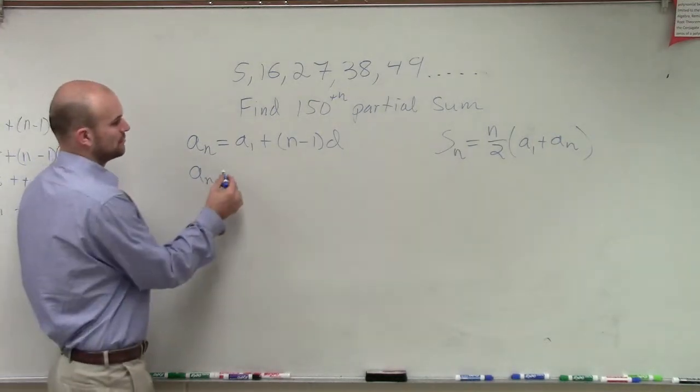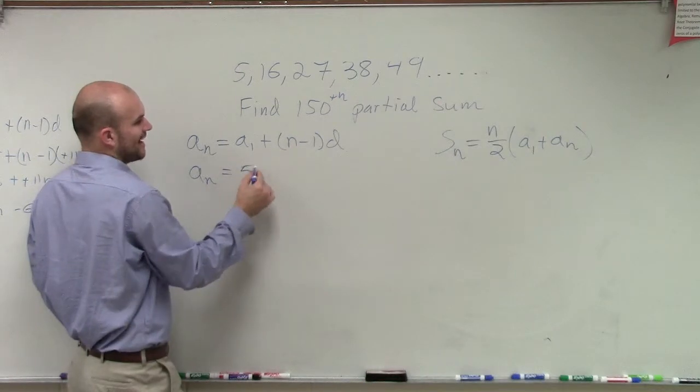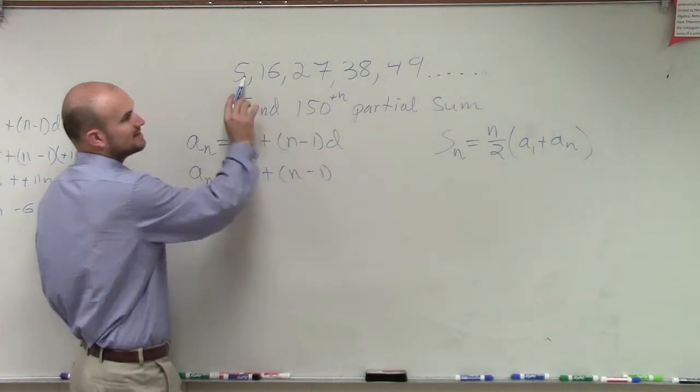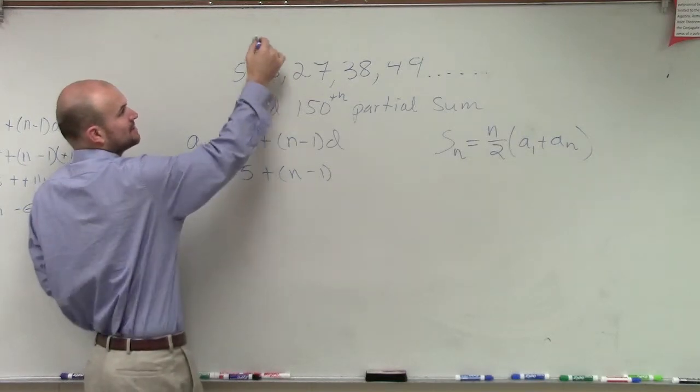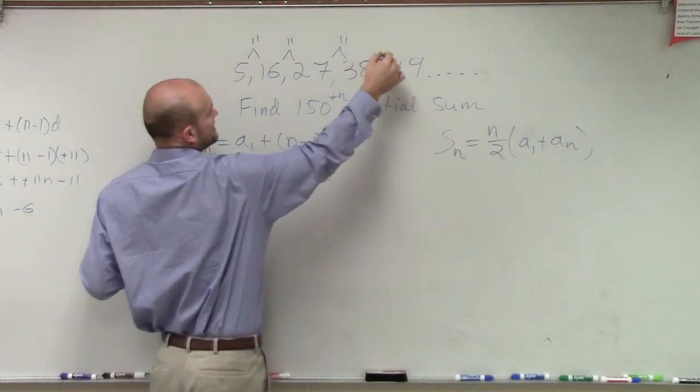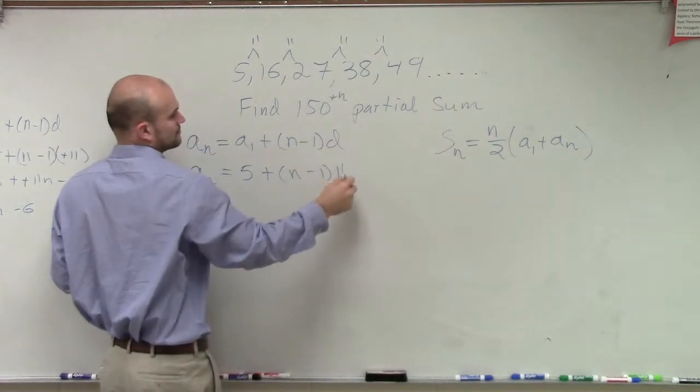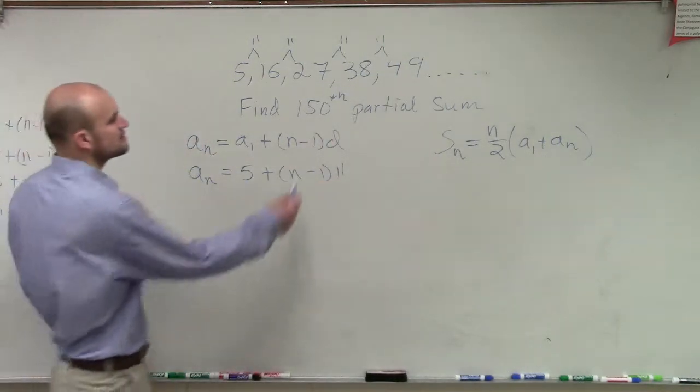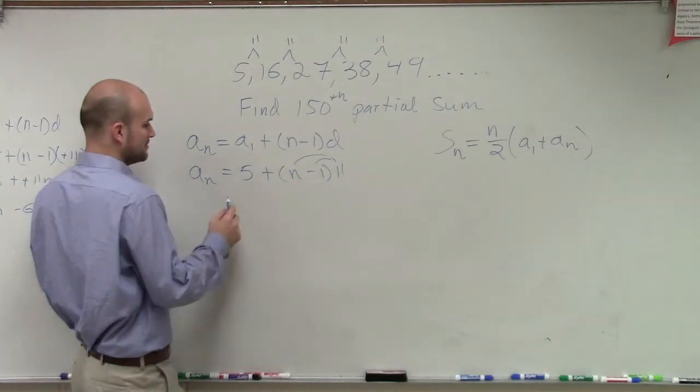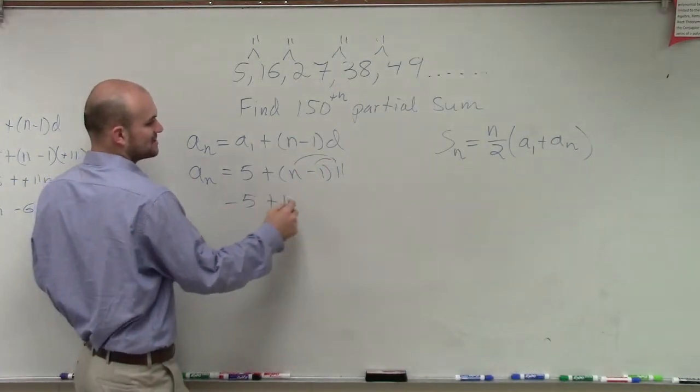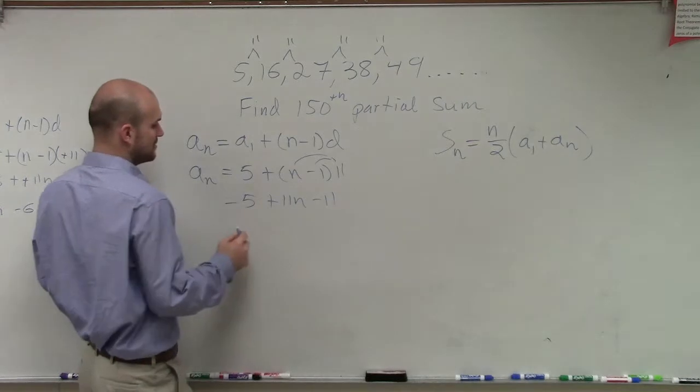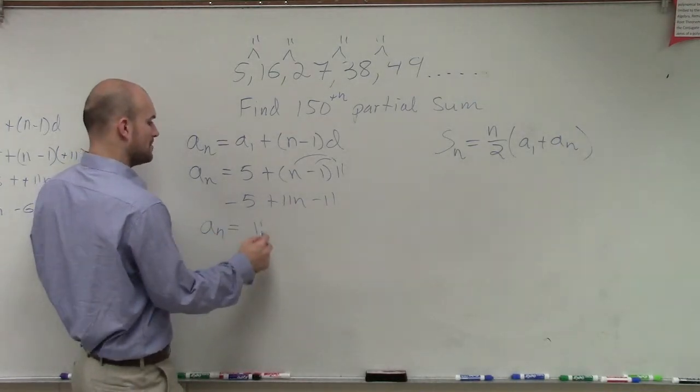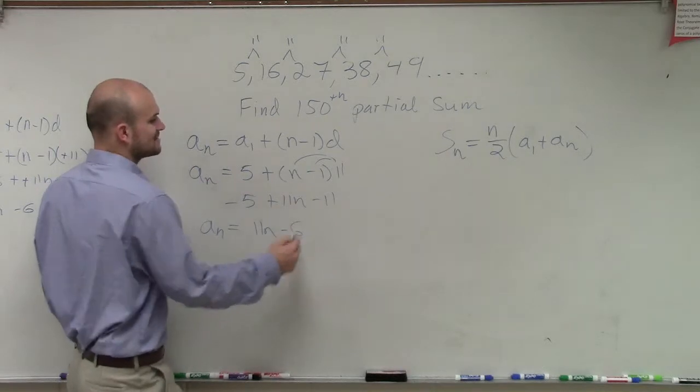So, let's go ahead and find out what the rule is. So, we know that a sub 1 is 5 plus n minus 1. And then the difference, if we notice, between each one of these terms, our difference is 11. So, now let's apply the distributive property. So, what I get is 5 plus 11n minus 11. Therefore, my rule for a sub n equals 11n minus 6.